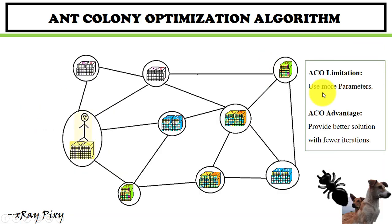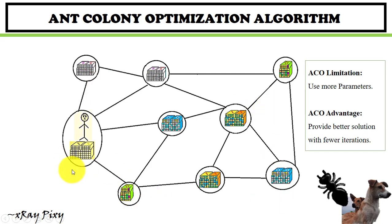The limitation of this algorithm is that it uses many parameters. An advantage is that with fewer iterations, it can provide a better solution. The algorithm can be applied to the Traveling Salesman Problem — visiting each city exactly once and returning to the starting city — which will be discussed in another video. That's all for this video; if you have any questions, comment below.